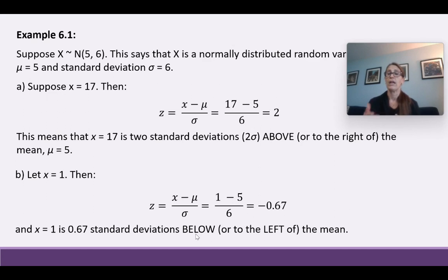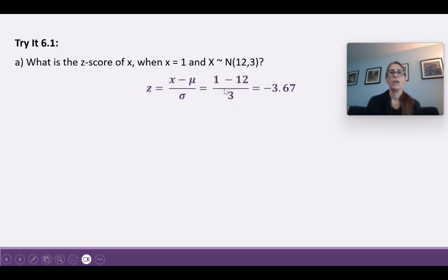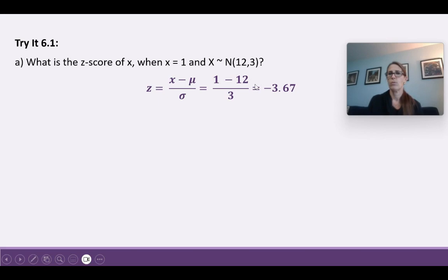If a z-score is positive, we're to the right of the mean; if negative, we're to the left. For a different distribution — x has a normal distribution with a mean of 12 and a standard deviation of 3 — the z-score for x = 1 is (1 - 12) / 3 = -3.67. If doing this in Excel, make sure you parenthesize the numerator; otherwise you'd get a different result. Always put parentheses around numerators or denominators with addition or subtraction.